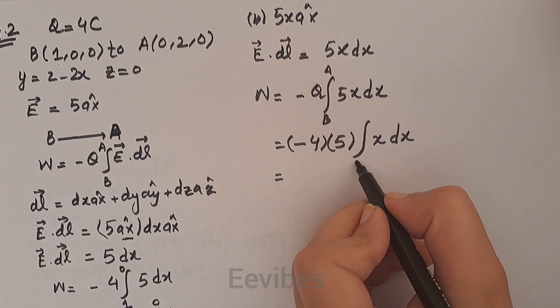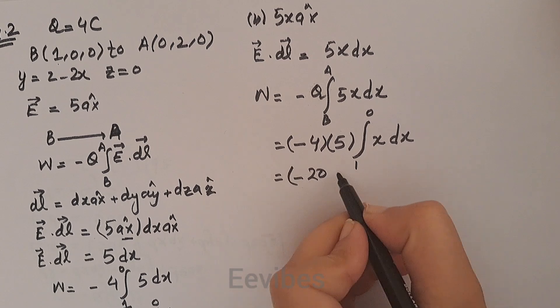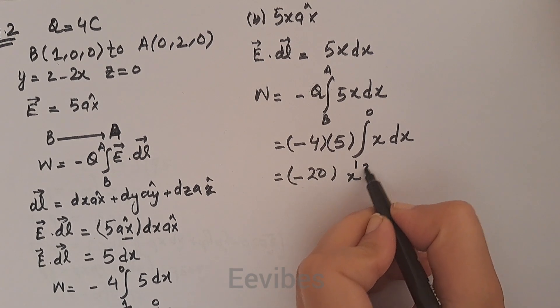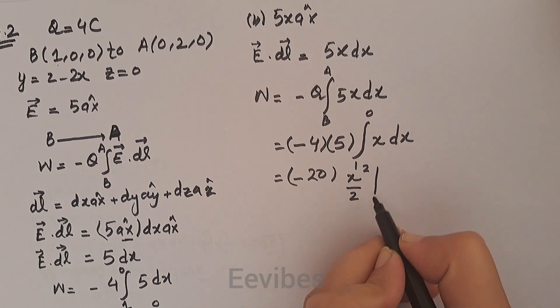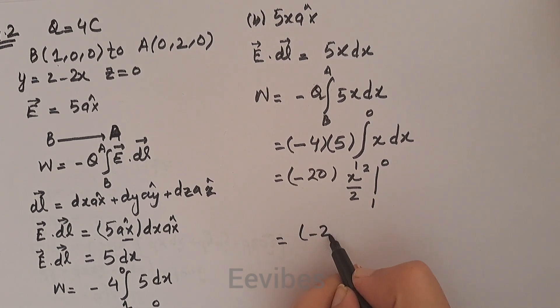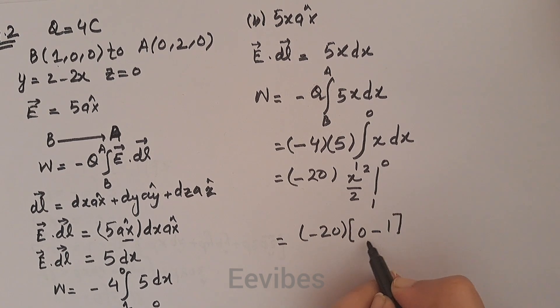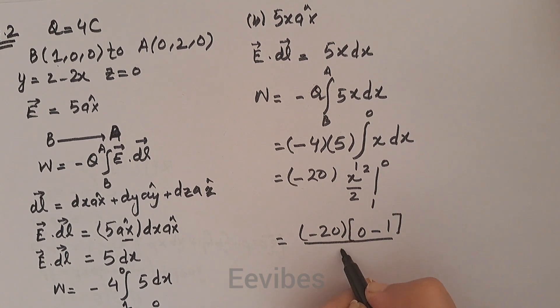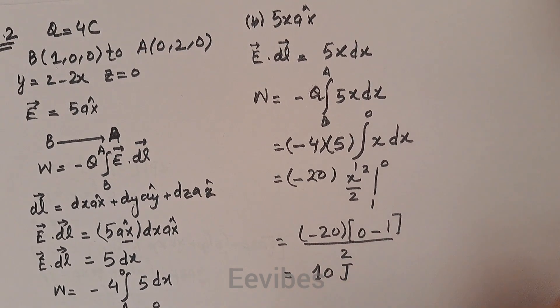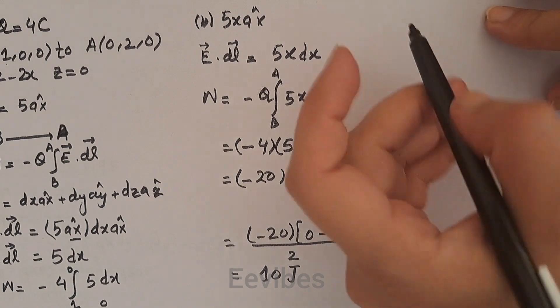X is varying from 1 to 0 again. This becomes -20, and when you integrate x with respect to x, it becomes x²/2 with the limit of 1 and 0. So -20, here you will have 0 minus 1 divided by 2, so this is equal to 10 joules. This is part B.